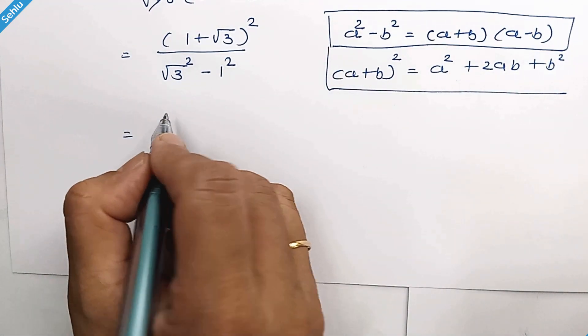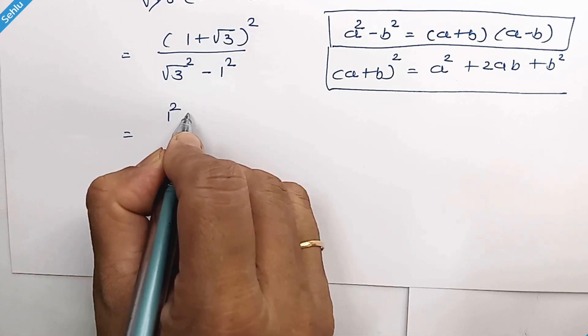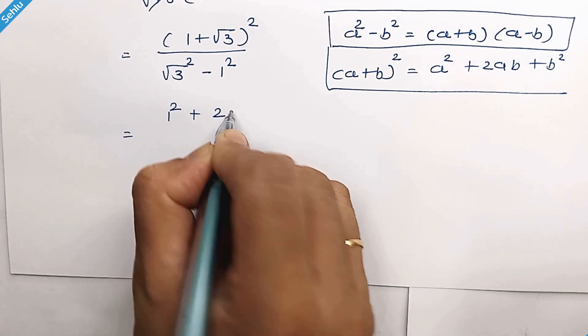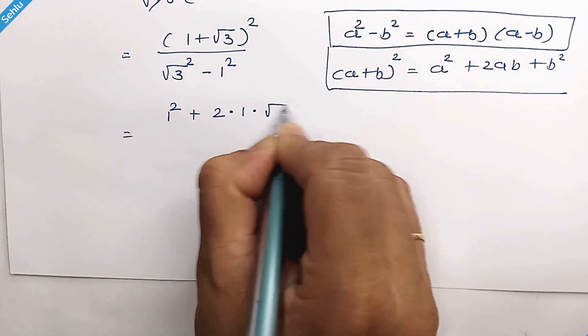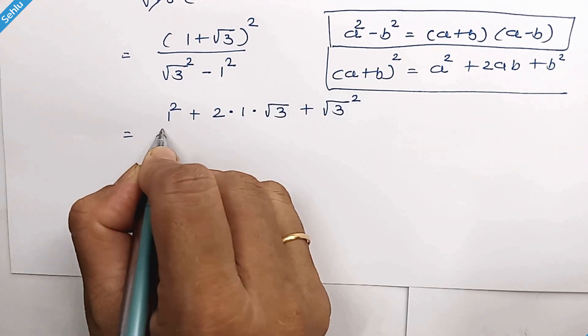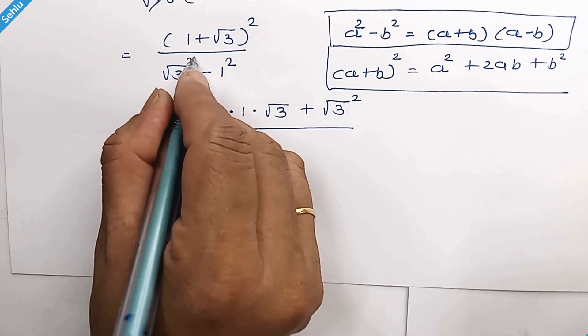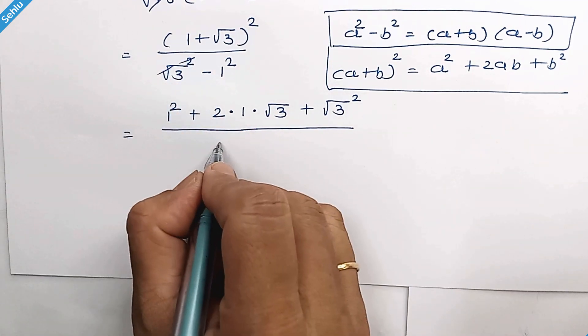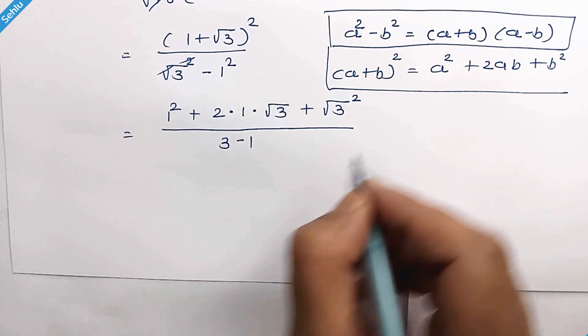So our next step will be 1 squared plus 2 times 1 times square root of 3, plus square root of 3 squared. So here we have 3 minus 1.